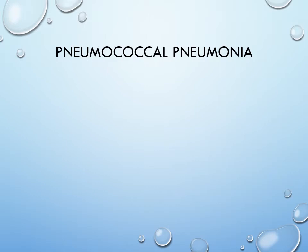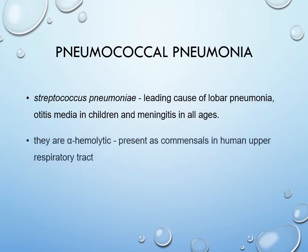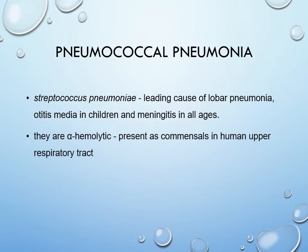Now the most important causative agent of pneumonia is pneumococcal pneumonia, which is caused by Streptococcus pneumoniae — a gram-positive coccus. It is the leading cause of pneumonia in children and also the most important cause of meningitis across all age groups. These bacteria show alpha-hemolytic colonies on blood agar and are present as commensals in the upper respiratory tract.